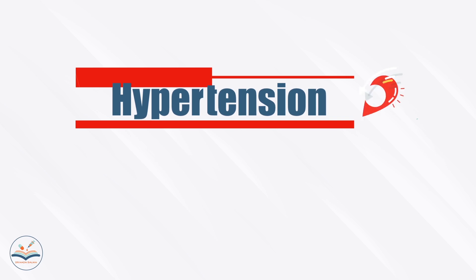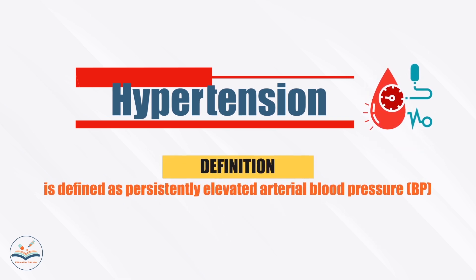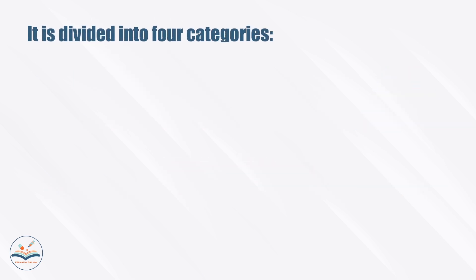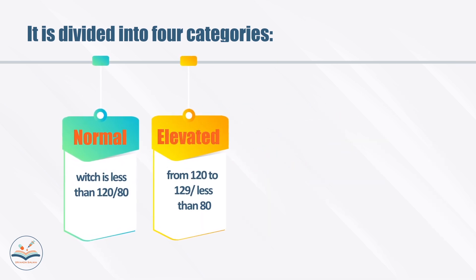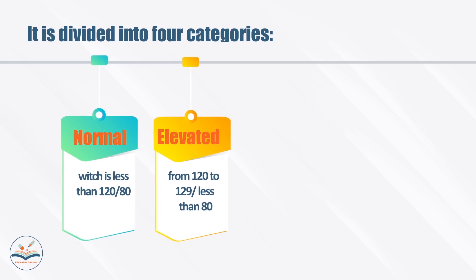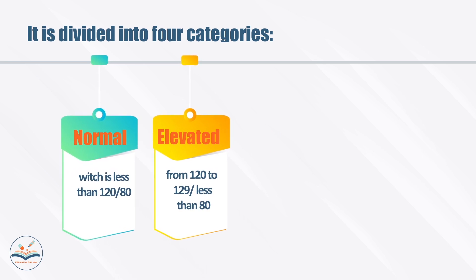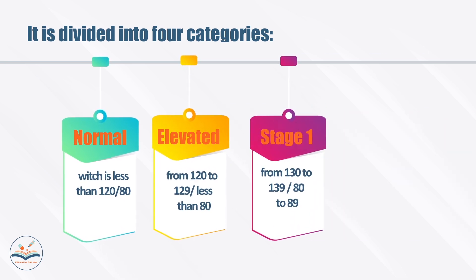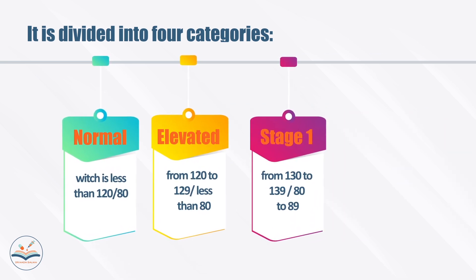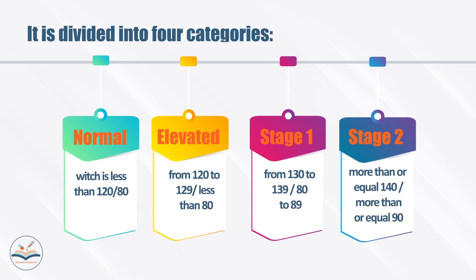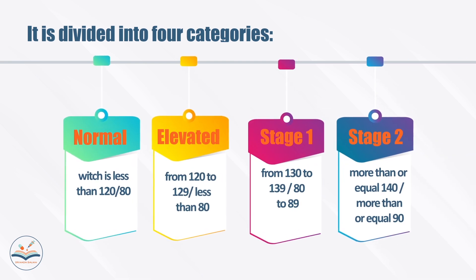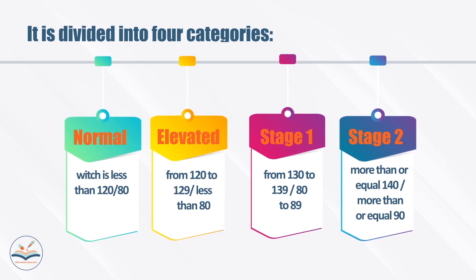Hypertension is defined as persistently elevated arterial blood pressure. It is divided into four categories: normal, which is less than 120 over 80; elevated blood pressure, which is from 120 to 129 over less than 80; stage one, which is from 130 to 139 over 80 to 89; and stage two, which is more than or equal to 140 over more than or equal to 90.